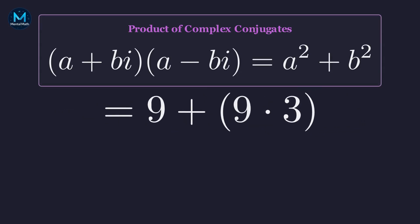3 squared is 9. Root 3 squared is 3. 9 times 3 is 27. And 9 plus 27 gives us exactly 36. Perfect! Our solutions check out.